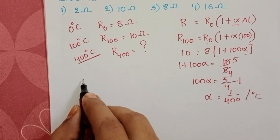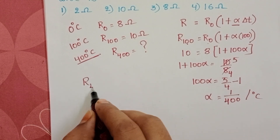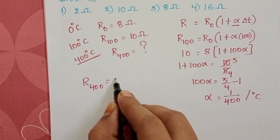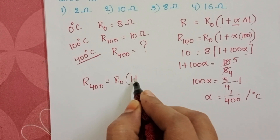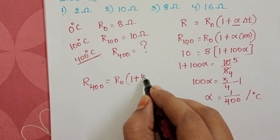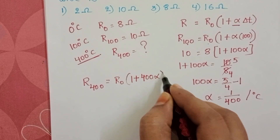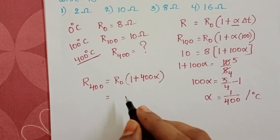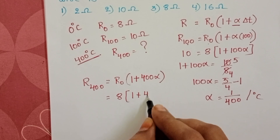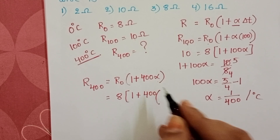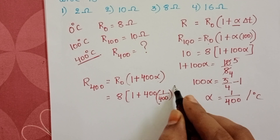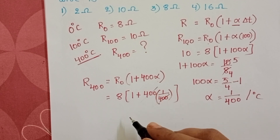Now we find the required resistance at 400 degree Celsius. R₄₀₀ = R₀ × (1 + α·ΔT). With ΔT = 400, substituting R₀ = 8 ohm and alpha = 1/400: R₄₀₀ = 8 × (1 + 400 × 1/400). The 400s cancel out.